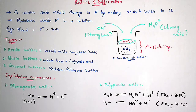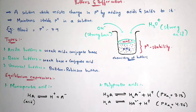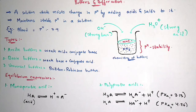Coming to polyprotic acids, when dissociated they can lose more amounts of protons. The constant dissociation of the first proton is denoted as K1, that is PKa1. PKa is nothing but constant dissociation. PKa plays a major role — it is a negative logarithm. When the PKa value gets increased we can say that the acid is very weak.